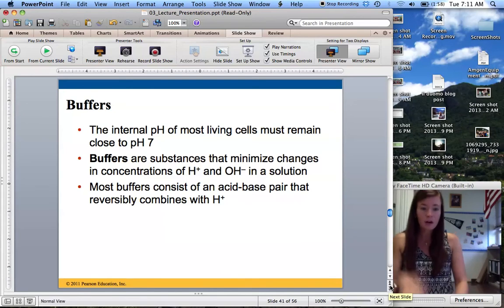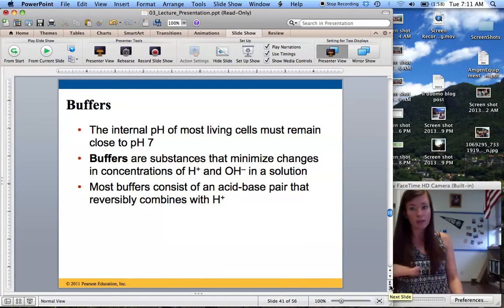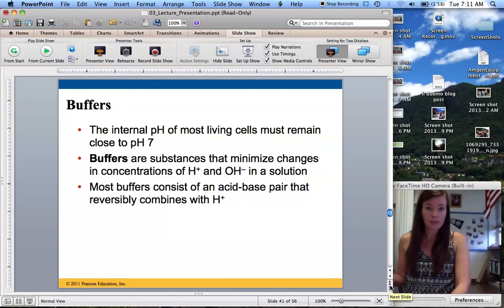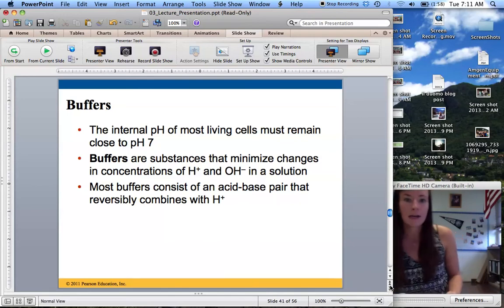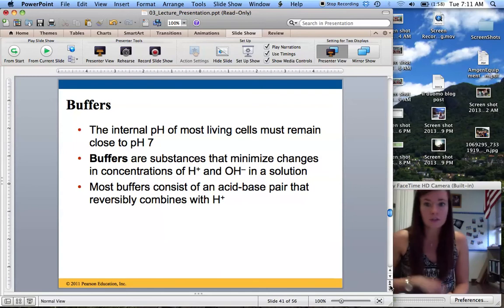So buffers are a way that we maintain a stable pH. So the internal pH of most living cells needs to be close to 7, like I said, between 6 to 8.